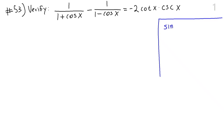The identity we are asked to verify is: 1 over (1 plus cosine x) minus 1 over (1 minus cosine x) equals negative 2 cotangent x times cosecant x. The trig identities we can use include the Pythagorean identity sine squared x plus cosine squared x equals 1, and any of the quotient identities.